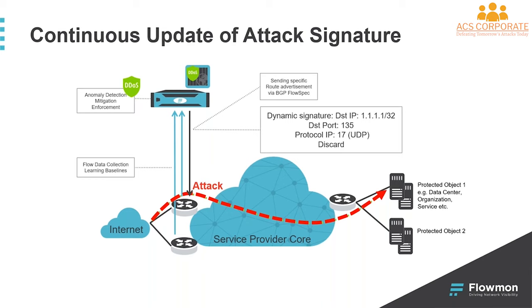Based on the attack detection, we are able to calculate the signature of the attack. So we see who is attacking whom, on what port, and which protocol is used. Using this information, we are able to create BGP flow spec rules, which we then send to a router. There is an example of such an attack signature here, where we see destination IP, destination port, and protocol, and the instruction to discard all the traffic with this signature.